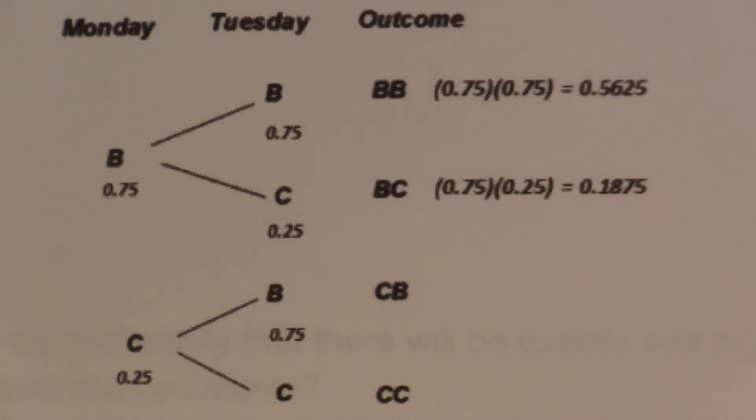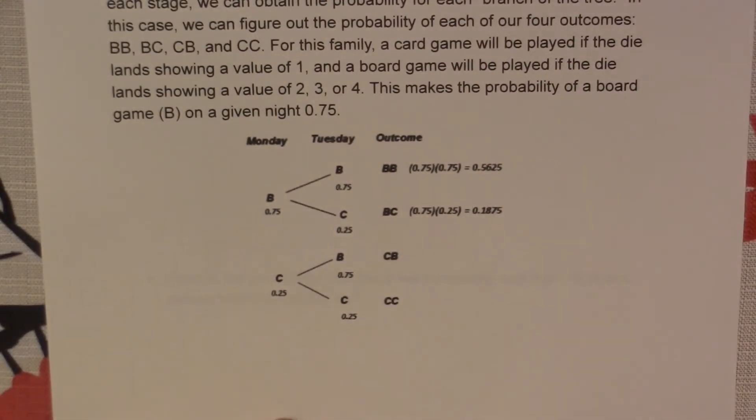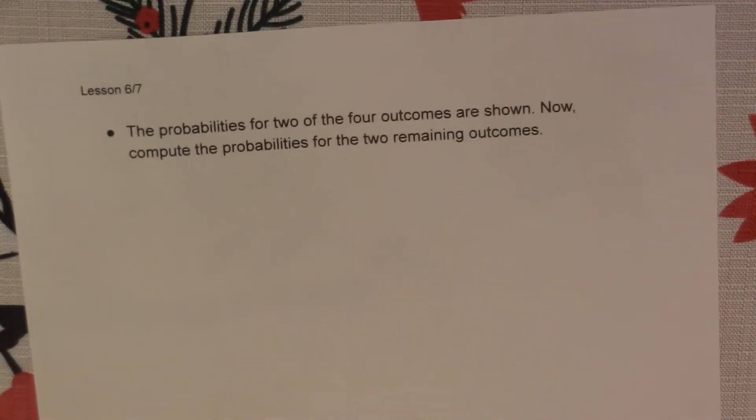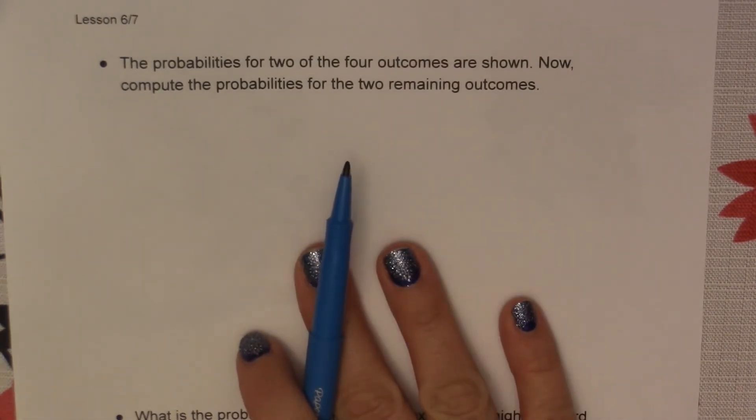Alright, let's look at our first question here. The probabilities for two of the four outcomes are shown. Now compute the probabilities for the two remaining outcomes.